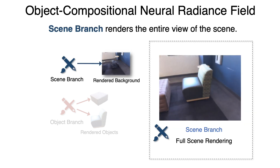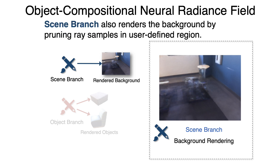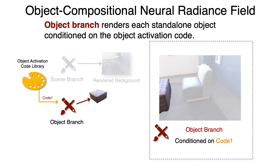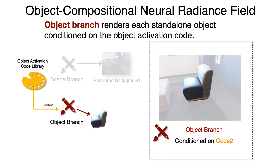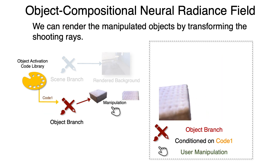The scene branch encodes and renders the entire scene as traditional NeRF does, and can also render the scene background by pruning ray samples in user-defined regions. The object branch renders each standalone object conditioned on the object activation code. With code 1, it renders the rectangular sofa with everything else removed; with code 2, it renders another blue sofa. To render with user-defined manipulation, we simply transform the shooting rays to the desired location.